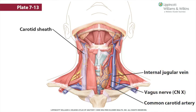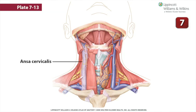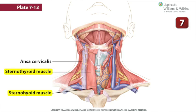Posterior to the sheath is the sympathetic trunk, and anterior to the sheath is the ansa cervicalis. The ansa cervicalis, which translates from Latin as 'loop in the neck,' is a motor branch of the cervical plexus formed by two roots. The superior root is a branch of the ventral ramus of C1 that briefly travels with the hypoglossal nerve before descending through the carotid triangle. It is joined by the inferior root, formed by the ventral rami of C2 and C3, forming a loop. The ansa cervicalis innervates three of the four strap muscles: the sternohyoid, the sternothyroid, and the omohyoid.